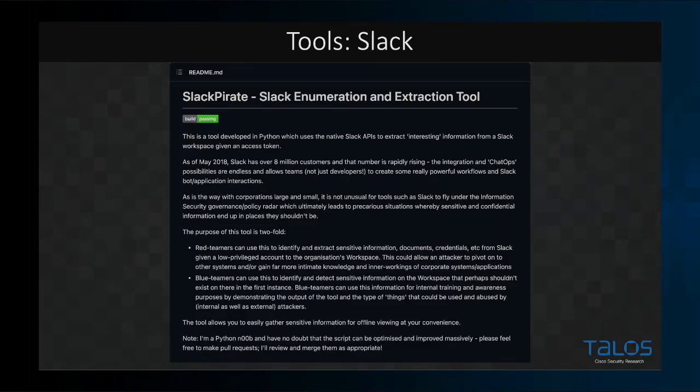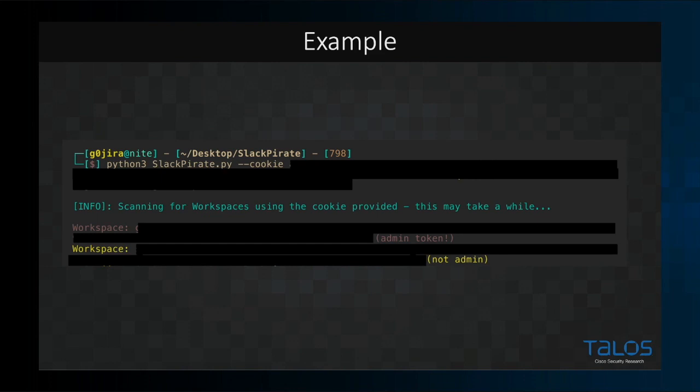There's a tool called Slack Pirate that extracts workspace information using the D cookie I mentioned. It returns access tokens for individual workspaces a user belongs to. I've seen write-ups where this is being used in real-world red team engagements. I ran Slack Pirate against an account I created for this presentation — I created the account, created a workspace I was admin of, and joined another workspace I was not admin of. I took that D cookie, ran it through Slack Pirate, and within a couple seconds I had access tokens for both workspaces.